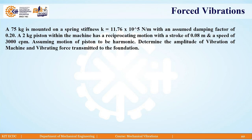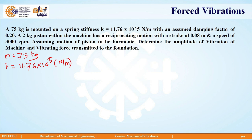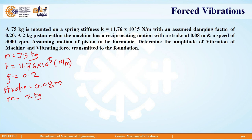The first problem statement: a 75 kg mass is mounted on a spring with stiffness K equal to 11.76 × 10⁵ Newton per meter. The assumed damping factor zeta is 0.2. A 2 kg piston within the machine has a reciprocating motion with a stroke of 0.08 meter, and the speed is given as 3000 rpm.